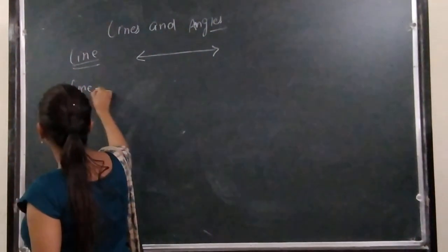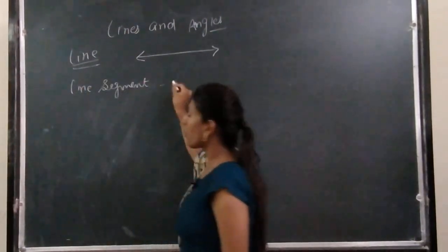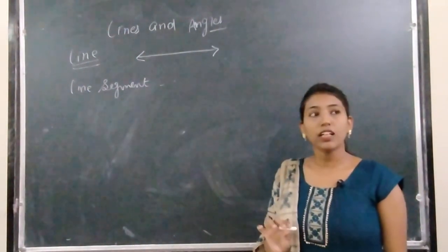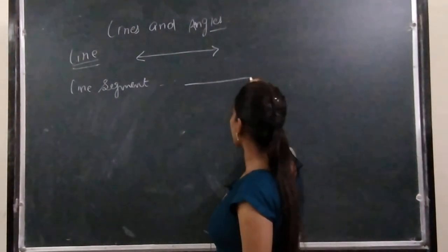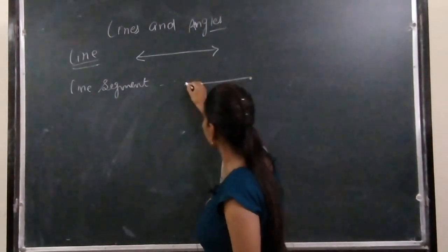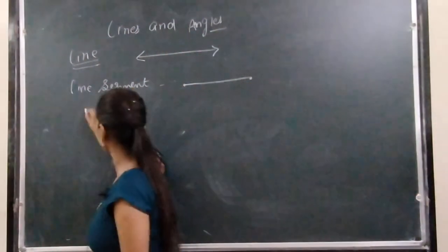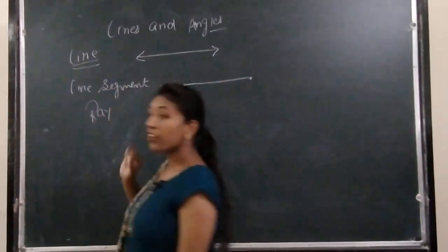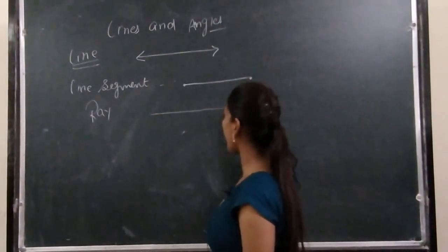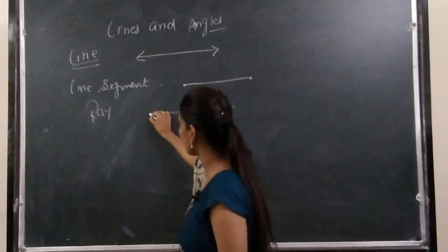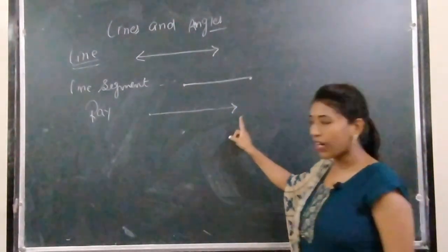Next comes line segment. A line segment is a part of a line having two endpoints. Next comes ray. A ray is also a part of a line having only one endpoint and it can be extended from only one side.